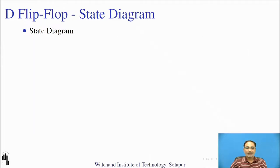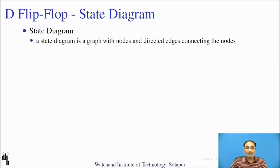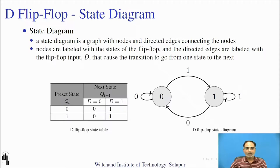Now let us go to the state diagram for the D flip-flop. You can refer to the state table we derived in the last slide. The state diagram is a graph with nodes and directed edges connecting all the nodes. The nodes are labeled with the states, so the D flip-flop can be in one of two states: 0 or 1. The directed edges are labeled with the flip-flop input, which causes the transition from one state to another.